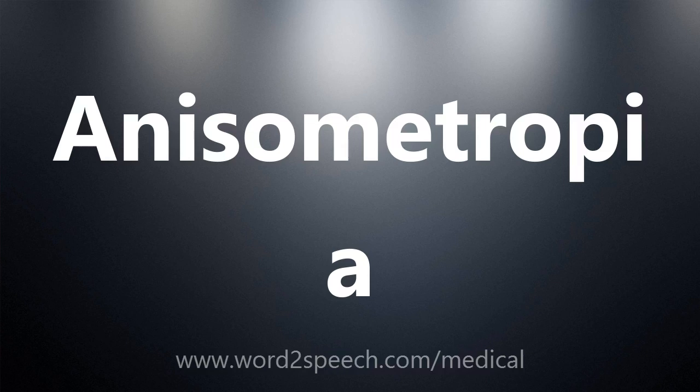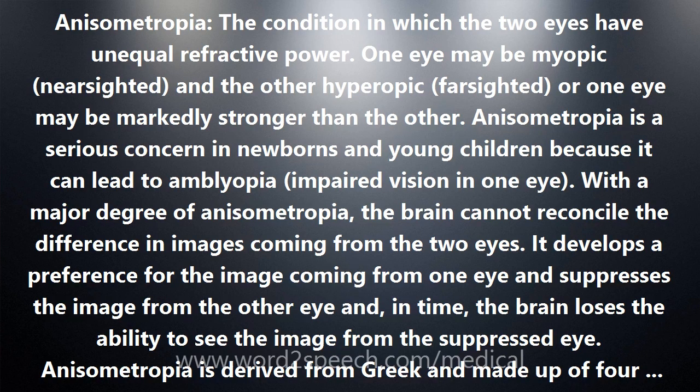Anisometropia: the condition in which the two eyes have unequal refractive power. One eye may be myopic (nearsighted) and the other hyperopic (farsighted), or one eye may be markedly stronger than the other.